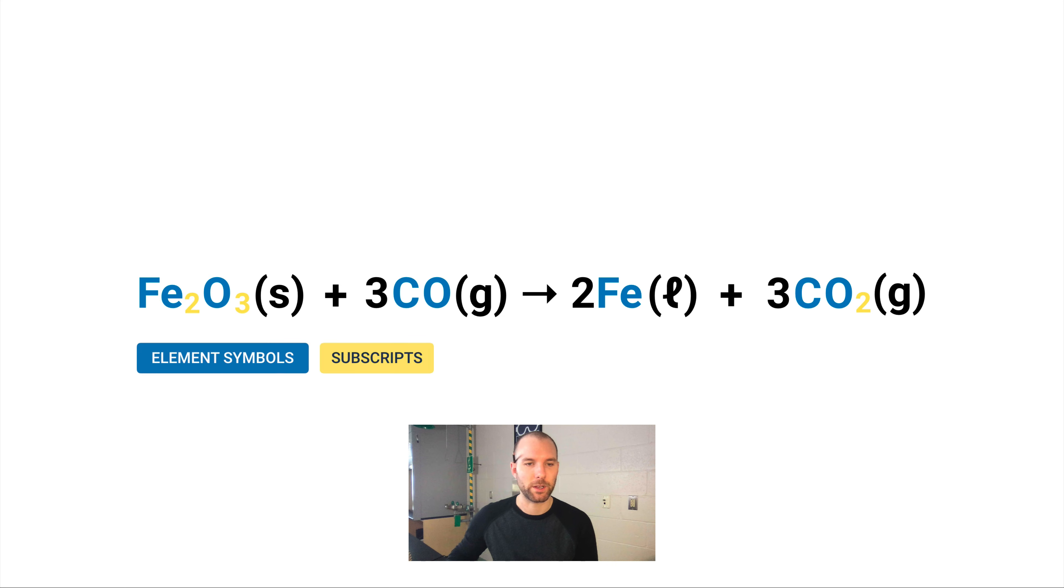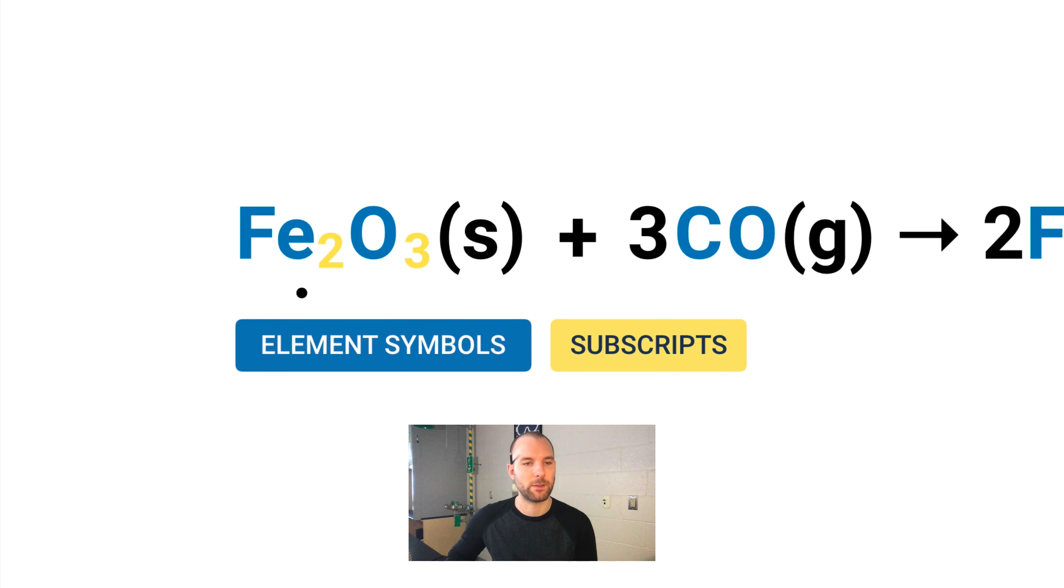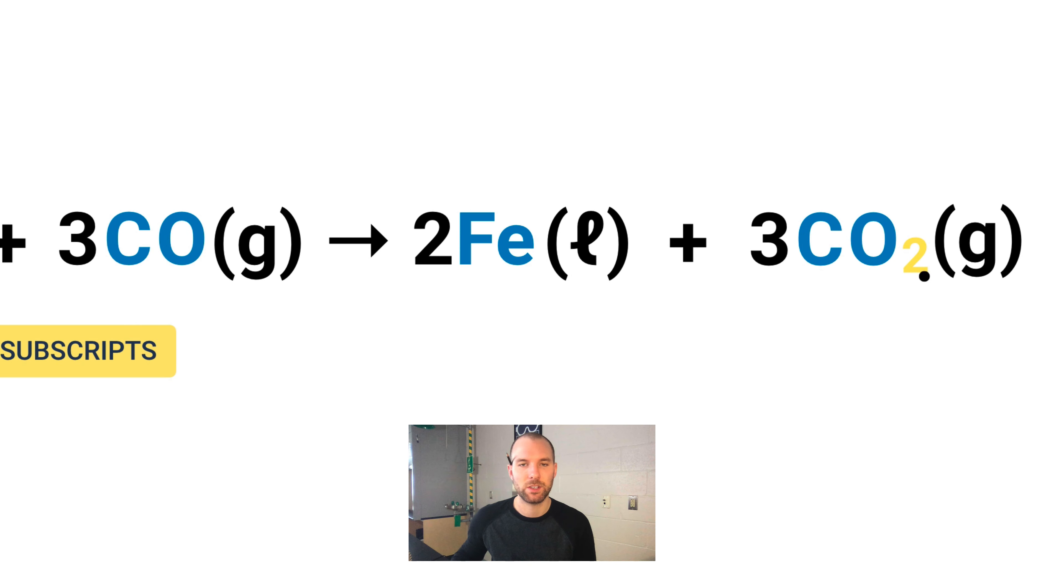For example, the two here means that there are two irons. Three means there are three oxygens. Two means there are just two oxygens here.